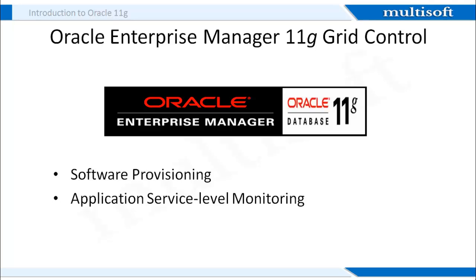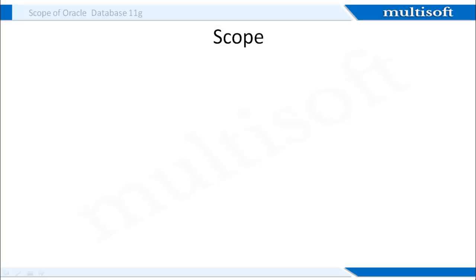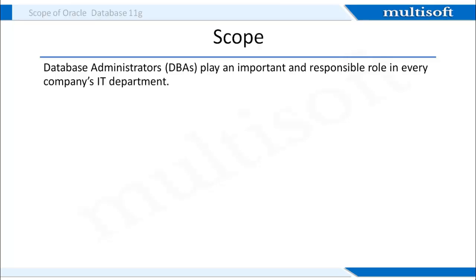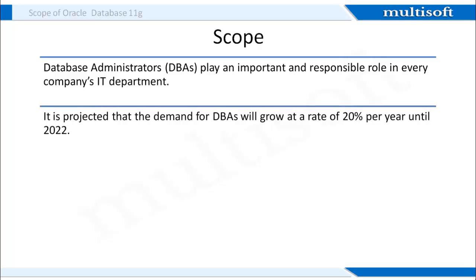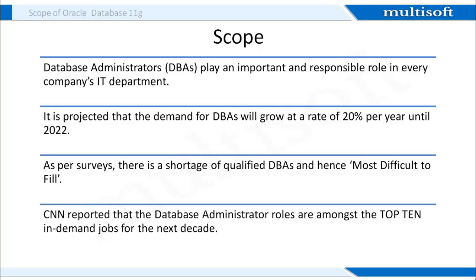Let's move on to understand the scope of Oracle Database 11G. This training prepares students for the path of becoming an OCA, i.e. Oracle Certified Associate. After clearing the relevant exams, individuals can work as database administrators. It is projected that demand for DBAs will grow at a rate of 20% per year until 2022. As per surveys, there is a shortage of qualified DBAs, making it the most difficult designation to fill. CNN reported that database administrator roles are among the top 10 in-demand jobs for the next decade.